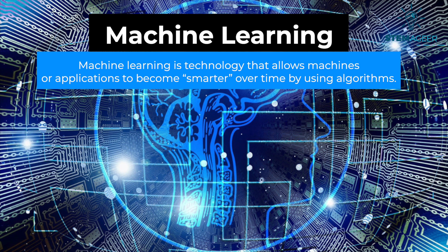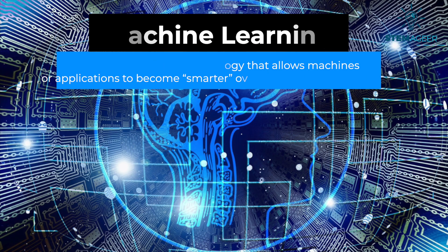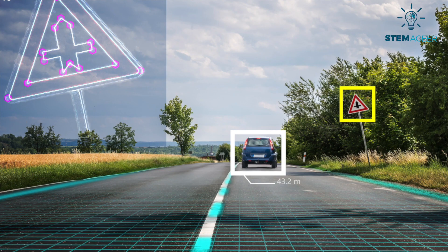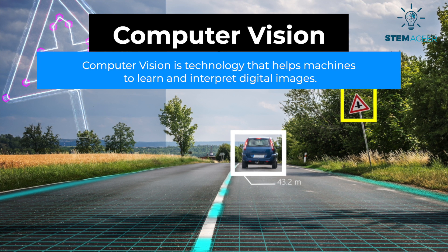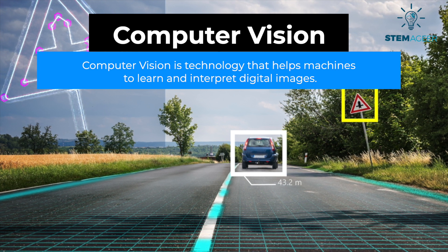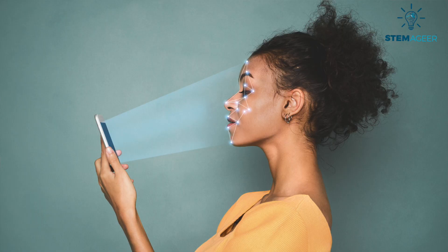Another type of AI technology is called computer vision. Computer vision is a technology that helps machines learn and interpret digital images. An example of how computer vision is used in the real world is facial recognition. Machines can use very complicated algorithms to detect and learn people's facial features. These algorithms can later be used to identify a person — for example, in photo tagging on your phone or social media sites, or even facial recognition on phones.